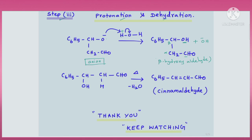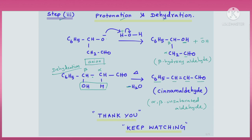The beta-hydroxy aldehyde then undergoes dehydration. On heating, it loses a water molecule — the hydrogen from the alpha carbon and the OH group from the beta carbon are removed as H₂O. A new double bond forms, giving C₆H₅-CH=CH-CHO, an alpha-beta unsaturated aldehyde, which is called cinnamaldehyde.